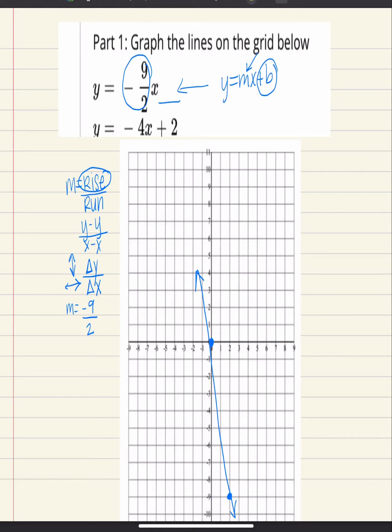Now for the next one, again, we're thinking y equals mx plus b. So in this case, we have a b value, which is positive 2. So on your y axis, that's your y intercept, you're going to put a dot at positive 2.